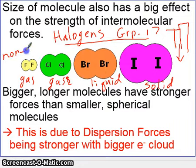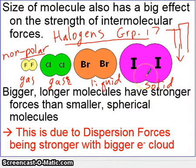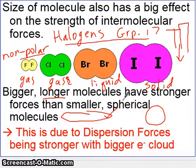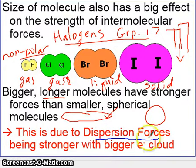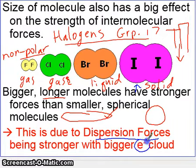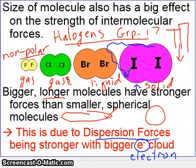All of these halogens are nonpolar because the atoms are equally distributed. So you can still be a solid even though you're nonpolar, as long as the molecule is big enough. Bigger, longer molecules have stronger forces than smaller spherical molecules. This is directly due to dispersion forces — the only force operating in nonpolar molecules. Dispersion force is so strong in something like iodine because it has a very large electron cloud, which can be more easily displaced, creating stronger bonds.